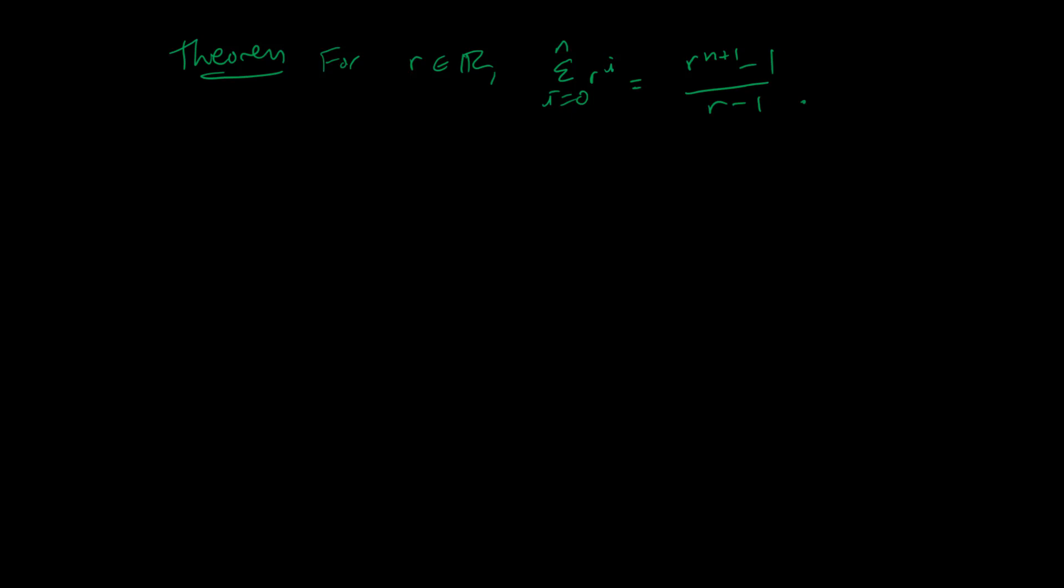And what a geometric series looks like is something like this, where we're adding up powers of r. So this would look like r to the 0 plus r to the 1st all the way up to r to the n. And when you want to add all those together, you get this expression, r to the n plus 1 minus 1 over r minus 1.